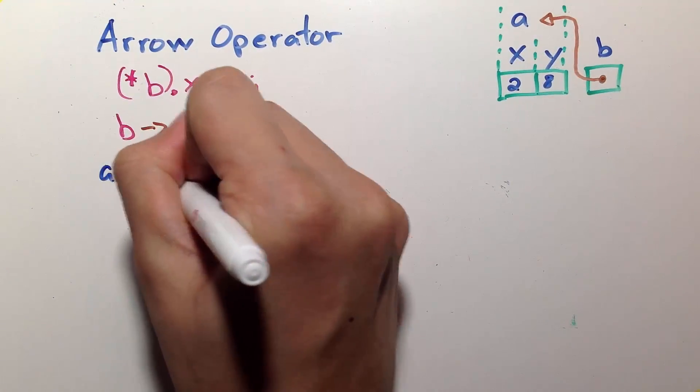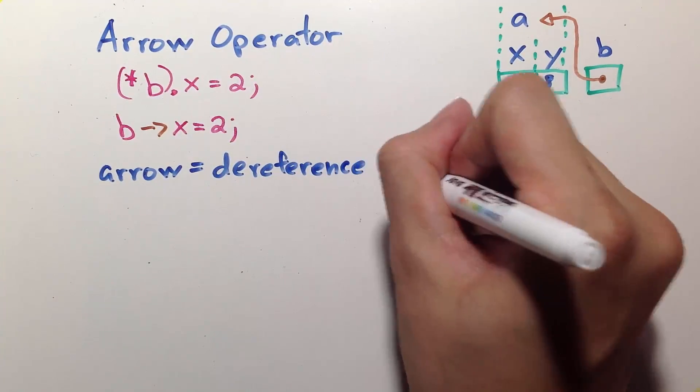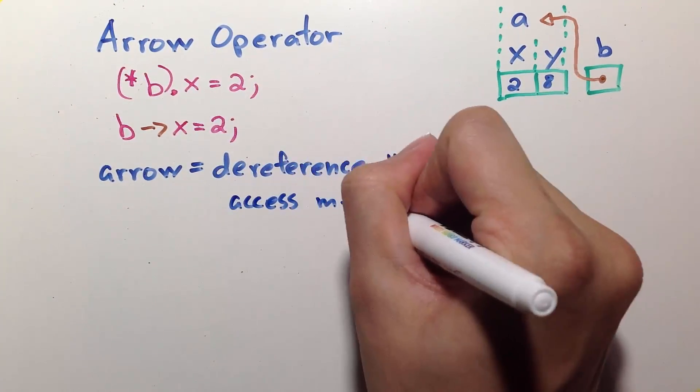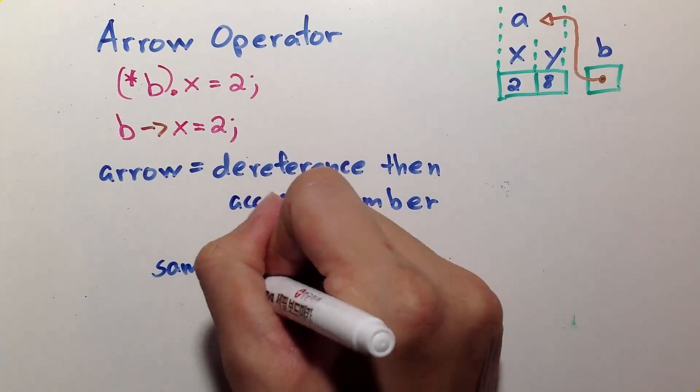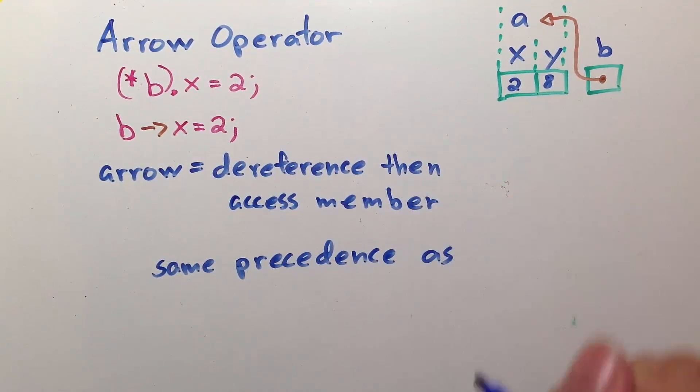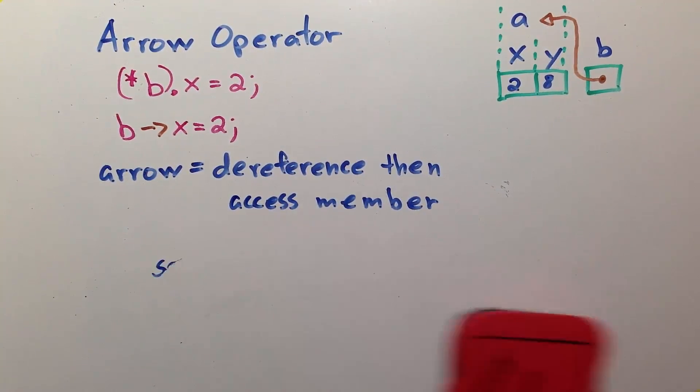The arrow operator is basically the combination of the dereference followed by the access member. And the beauty of this is that it has the same precedence as the dot operator.